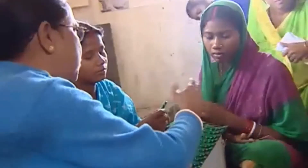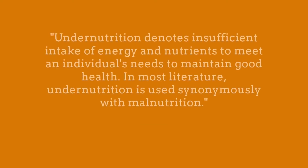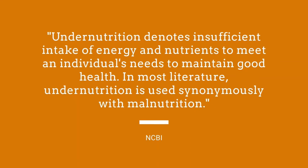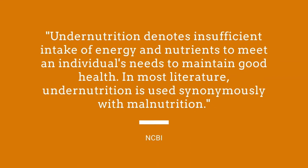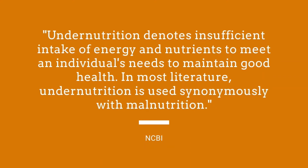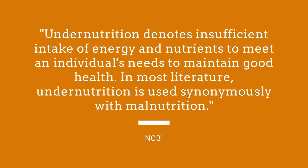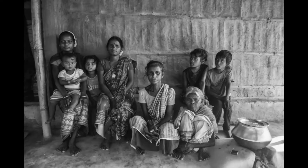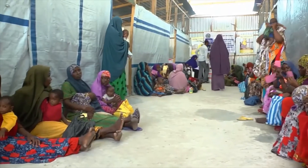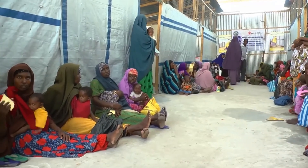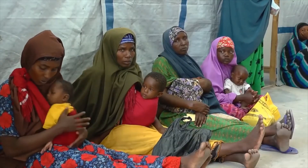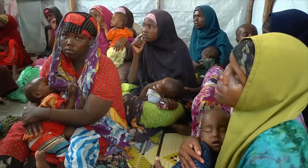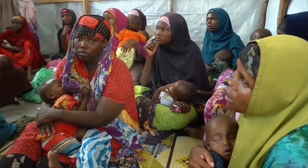Malnutrition is broadly categorized into undernutrition and overnutrition. As per NCBI, undernutrition denotes insufficient intake of energy and nutrients to meet an individual's needs to maintain good health. In most literature, undernutrition is used synonymously with malnutrition. A staggering 11% of the global population has been studied to be undernourished — an alarming figure, as undernourishment can be fatal if not tackled at the right time.